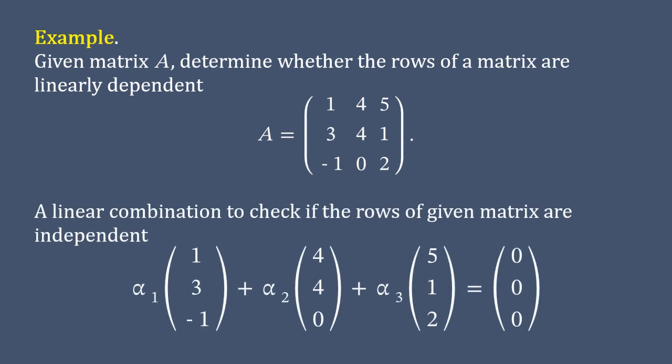First, we derive a linear combination of vectors which represent the rows of a given matrix. As one can see, we have three vectors in total that are multiplied by coefficients alphas, respectively.